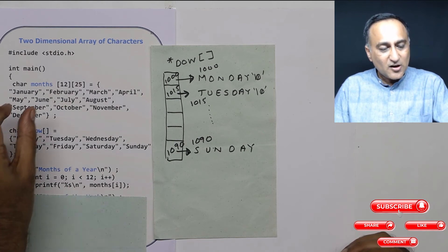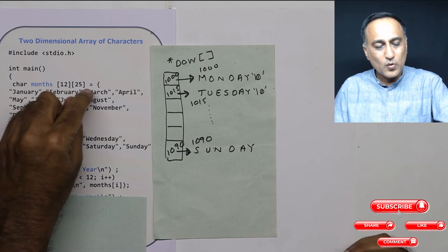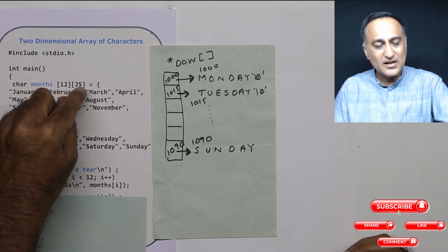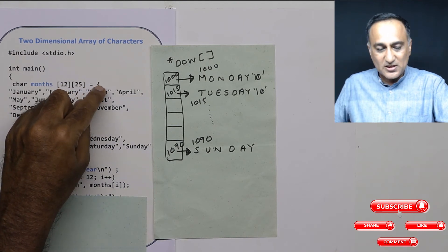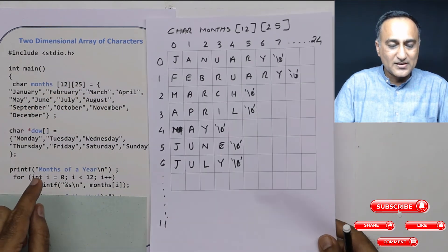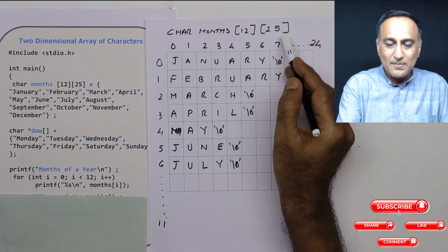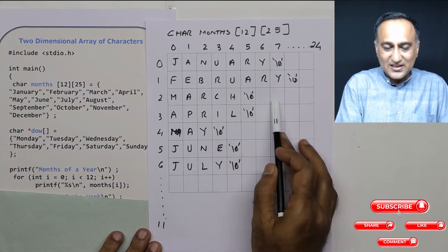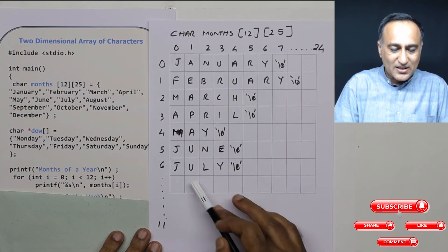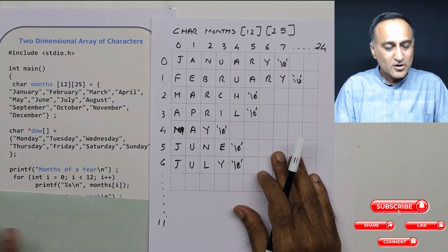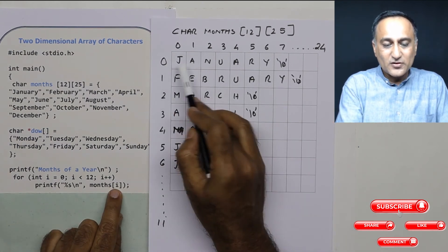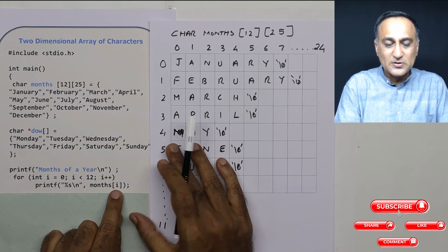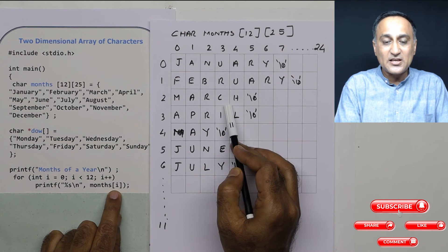You can think of a two-dimensional array as a number of one-dimensional arrays. This is the first one-dimensional array, this is the second, this is the third, and so on — all the way till the 11th array. When I say months[i], the address of the zeroth array is passed when i is 0, the address of the first array is passed when i is 1, and the address of the second array when i is 2.